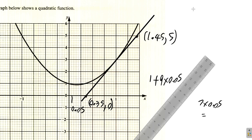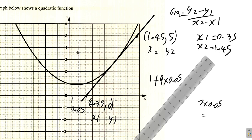If we want the gradient now, we could use gradient equal y2 minus y1 over x2 minus x1. If we consider this as point 1, this would be x1, y1. If we consider this as point 2, it would be x2, y2. So, we can see that x1 is 0.35, x2 is 1.45. We have y1 is 0 and y2 is 5.